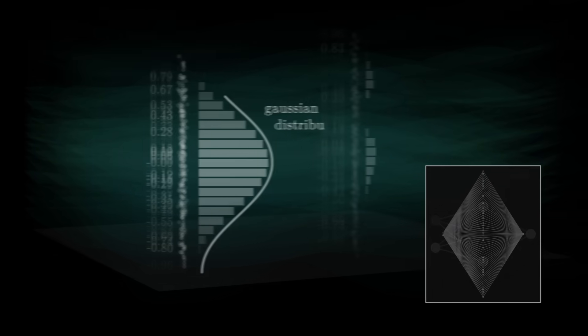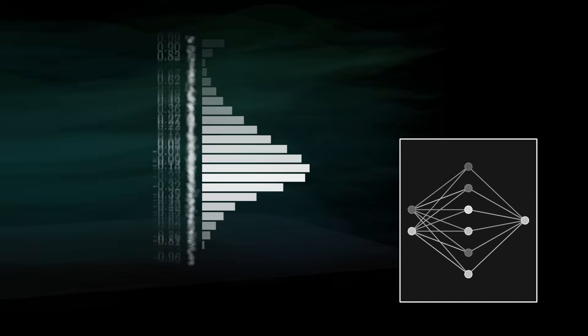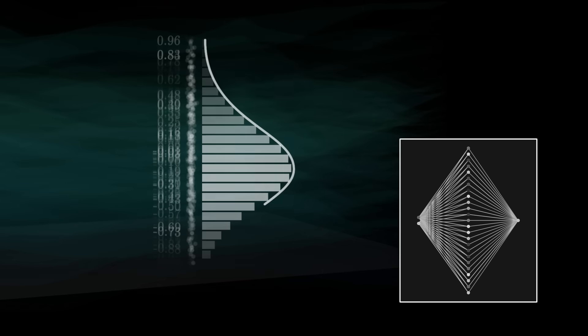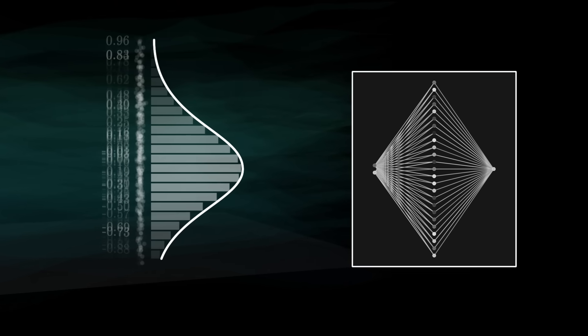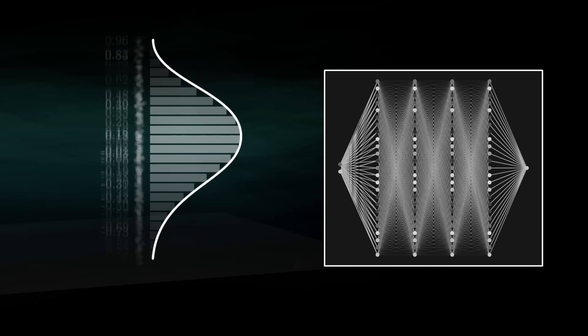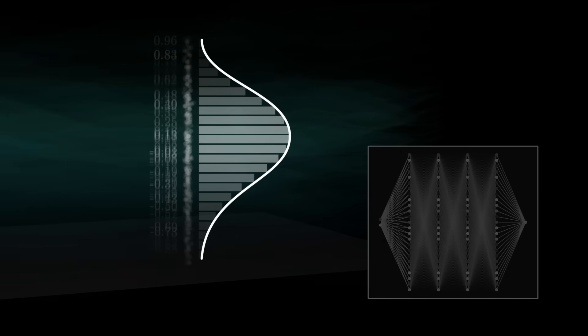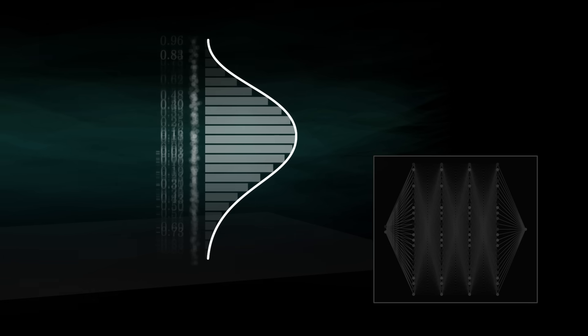Surprisingly, this is true for all input values. Regardless of the number of layers in the network. Thus, almost all neural networks converge towards this type of distribution when they become infinitely wide.